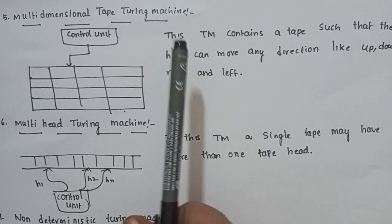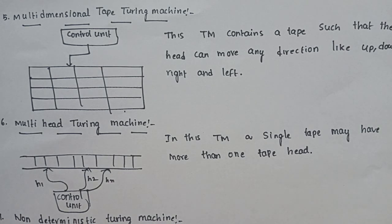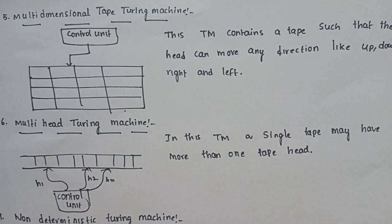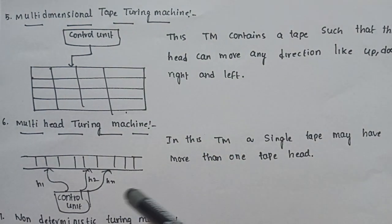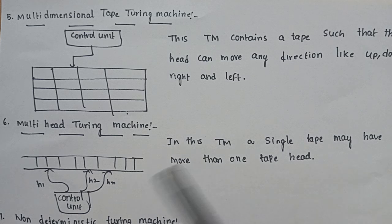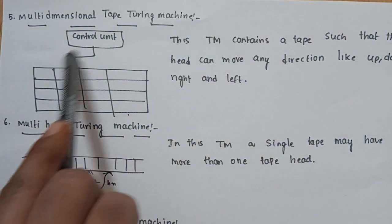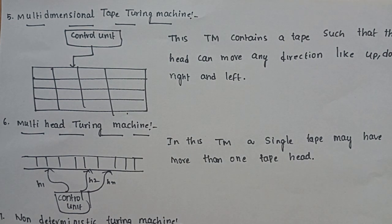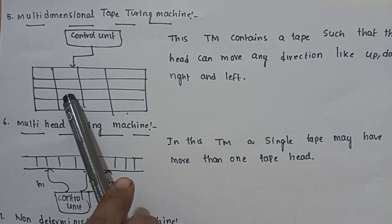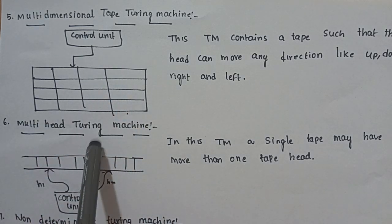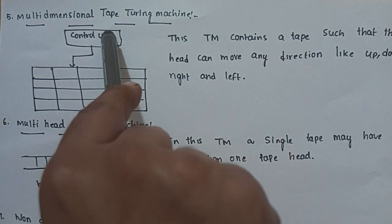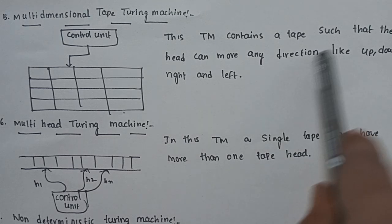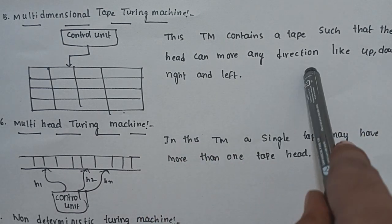Another type is the Multi-Dimensional Turing Machine. Dimension means length, breadth, height, and depth — this type of Turing Machine is multi-dimensional. This Turing Machine contains a tape such that the tape head can move in any direction: up, down, right, and left. That is the Multi-Dimensional Turing Machine.